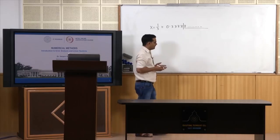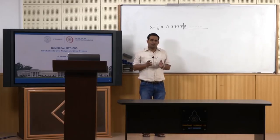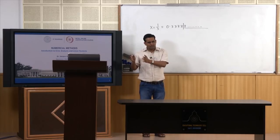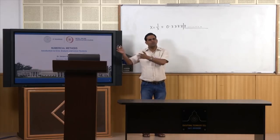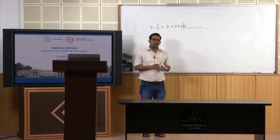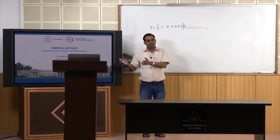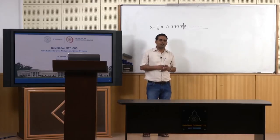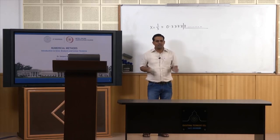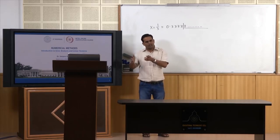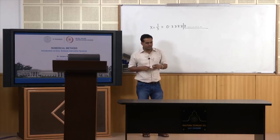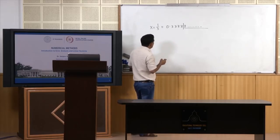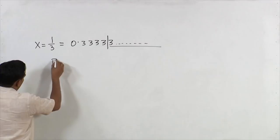In a computer, each number can be stored with a fixed length, meaning a fixed number of digits. It depends on the computer how many digits can be stored. Different computers can have different ability to store numbers and perform computations with different numbers of digits. But in general, we have a floating point representation.